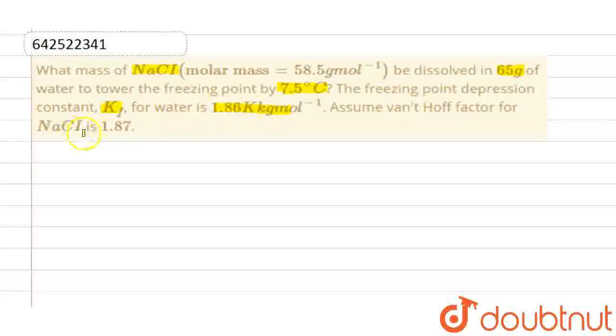Van't Hoff factor for NaCl is 1.87. The formula for depression in freezing point is delta Tf equals Kf into molality into van't Hoff factor. Depression in freezing point is 7.5.